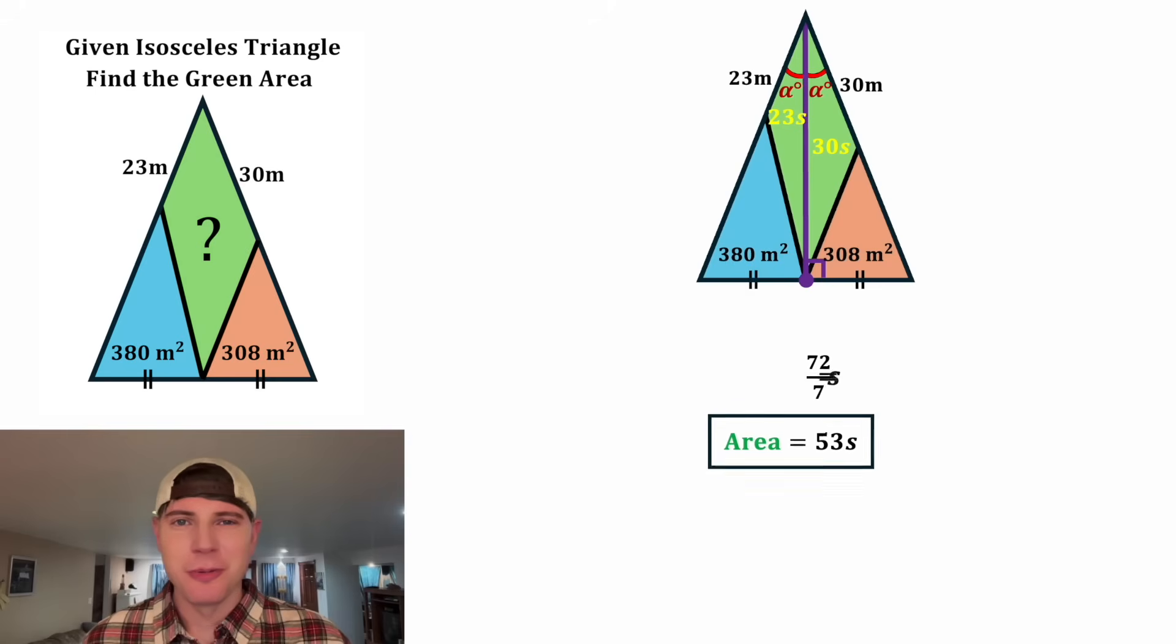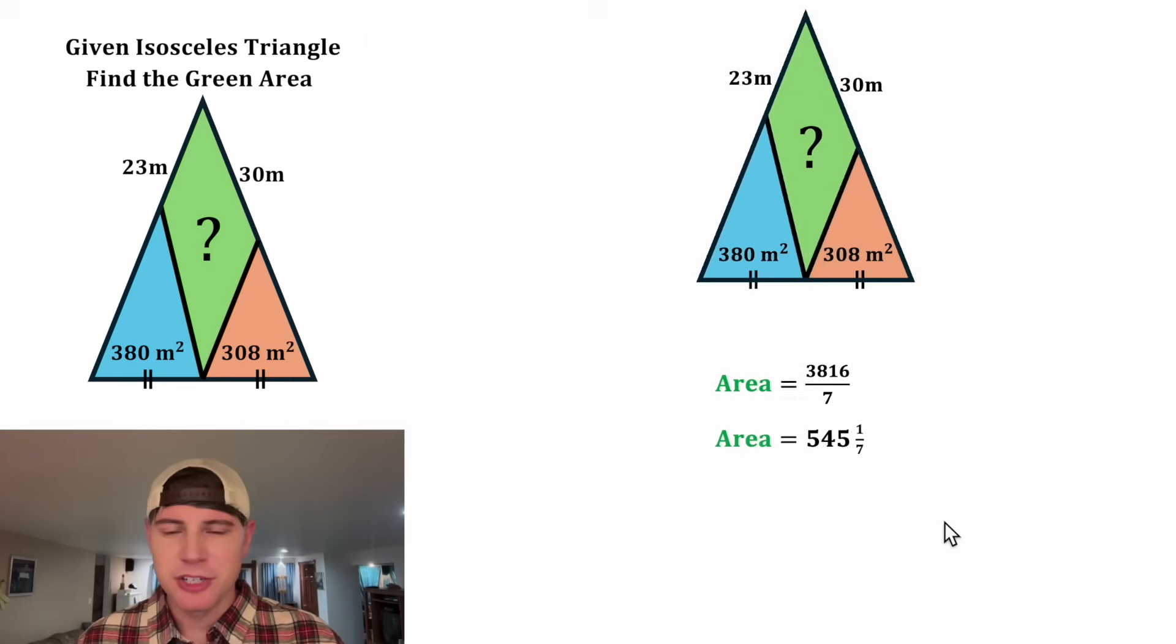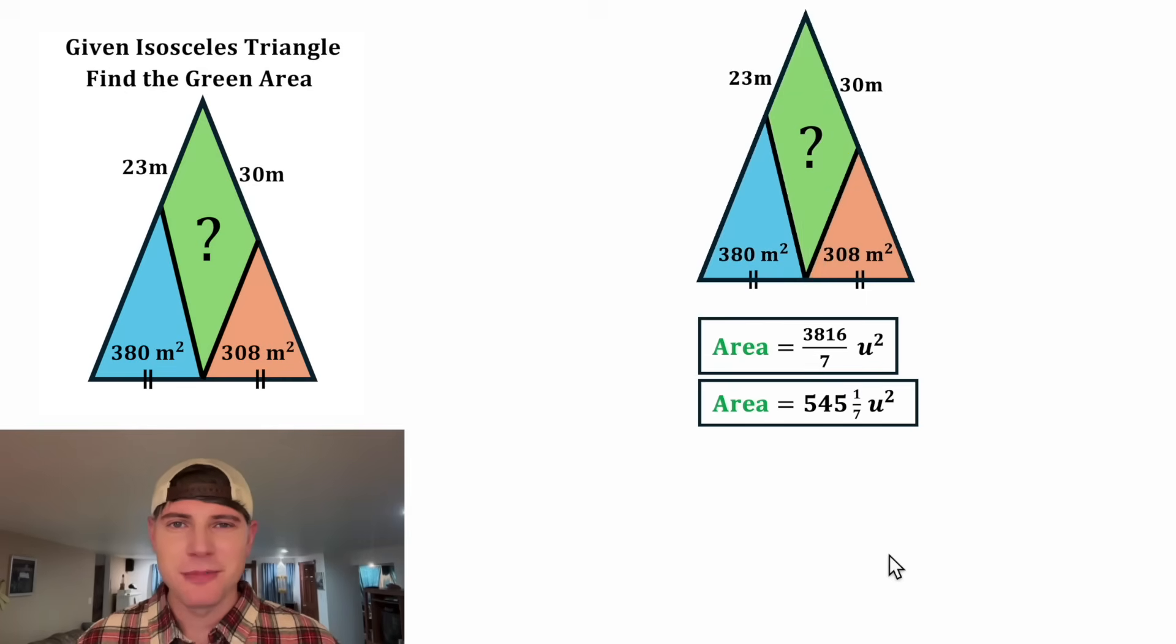And we are ready to plug that into our formula. Let's break this out of the box and give ourselves some room. And in the place of the s, let's plug in 72 over 7. And now we can do this times this divided by 7. And that'll give us 3816 over 7. Or as a mixed number, that's 545 and 1 seventh. And now we have the answer to our question. Let's give each of these a label of square units and put boxes around them. In this given diagram, the green area is equal to 545 and 1 seventh square units. How exciting.